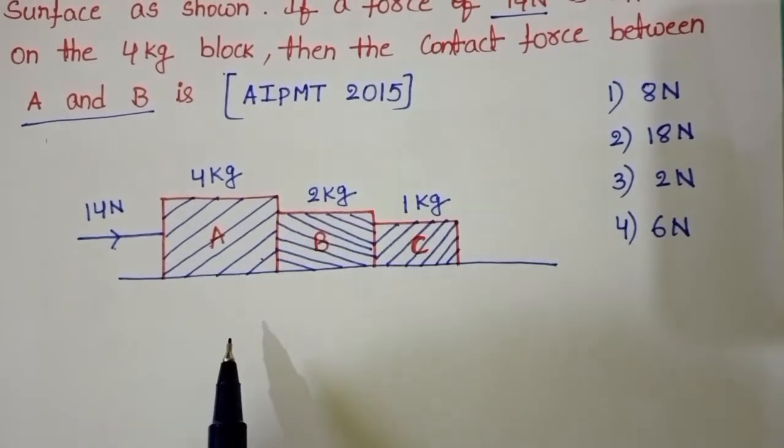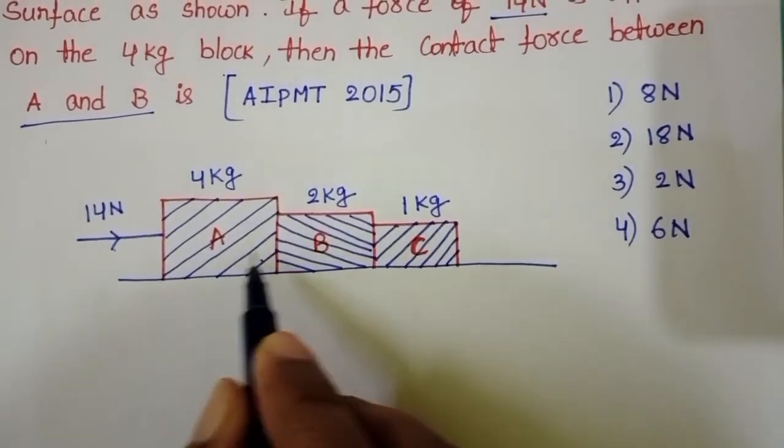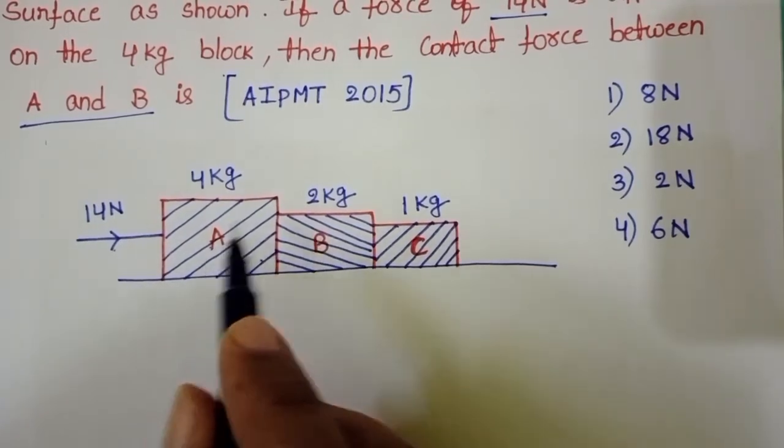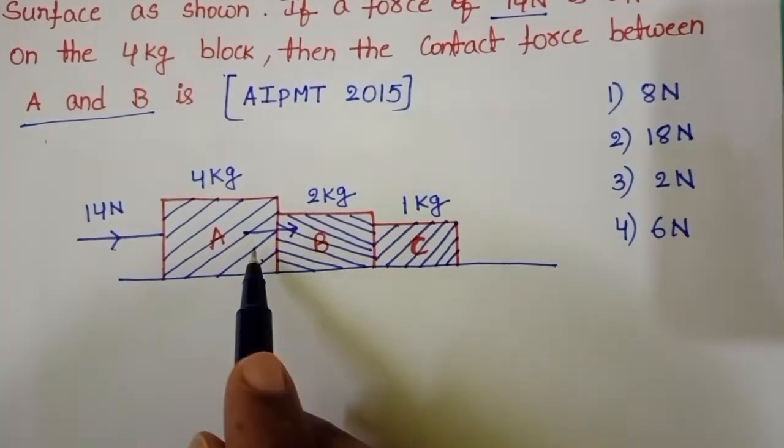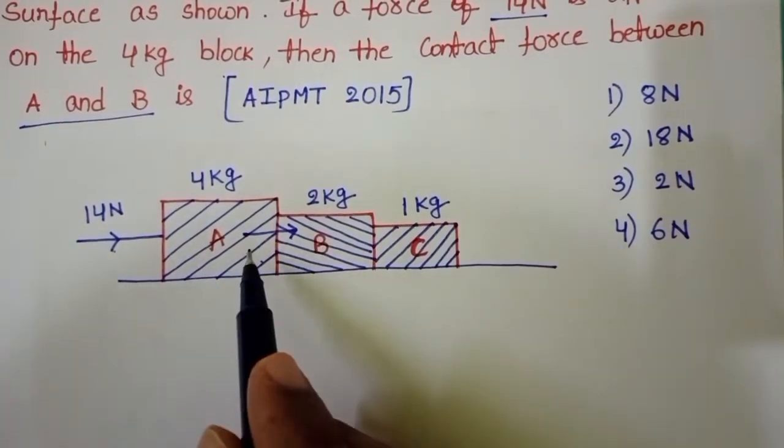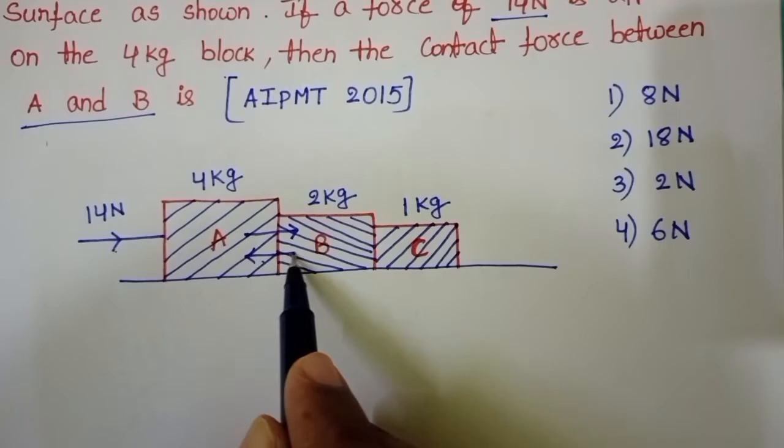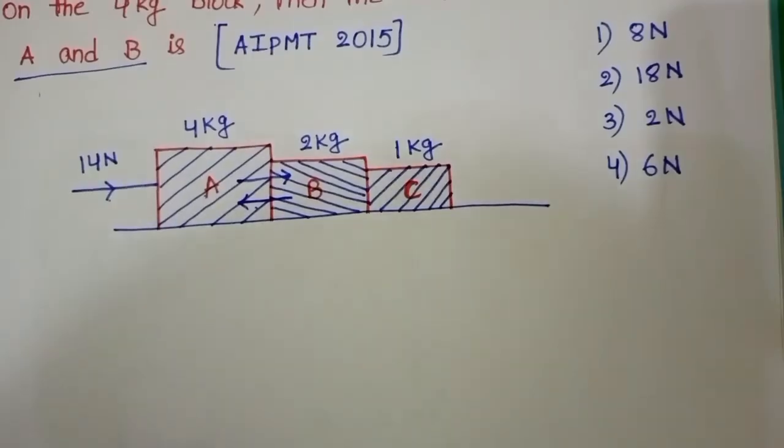In this question we have to find out the contact force between A and B. Because A pushes B, with the same force B also pushes A in the opposite direction. First, we need to find the acceleration of the system.